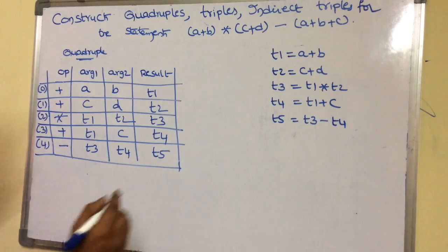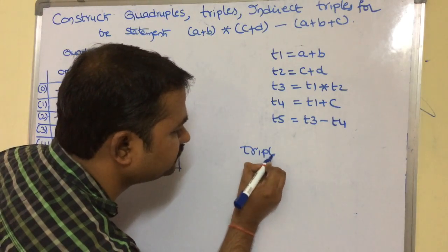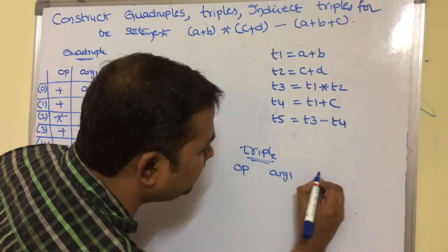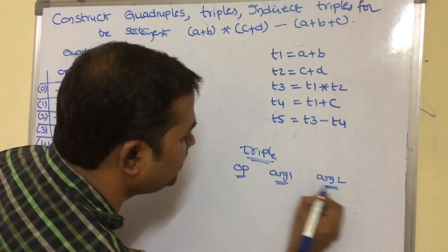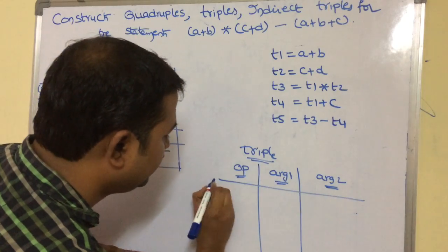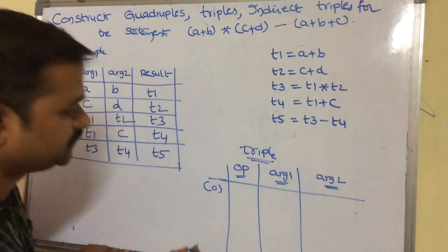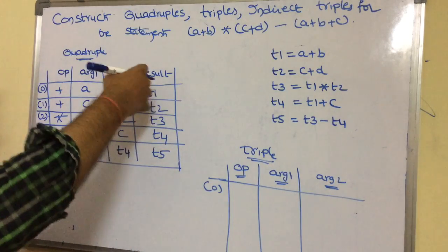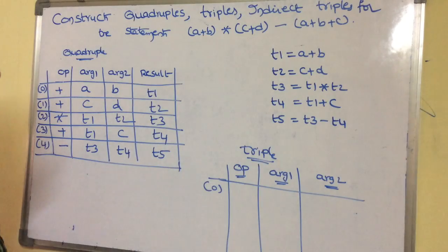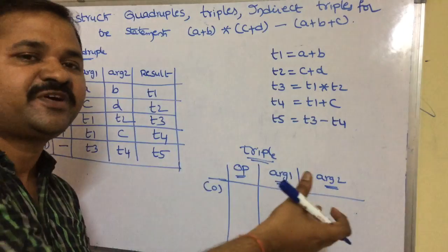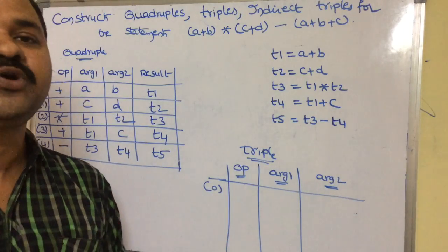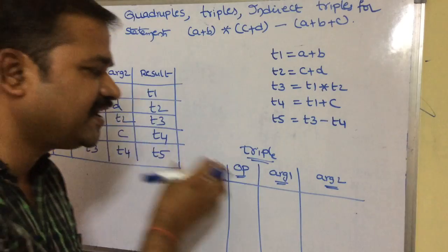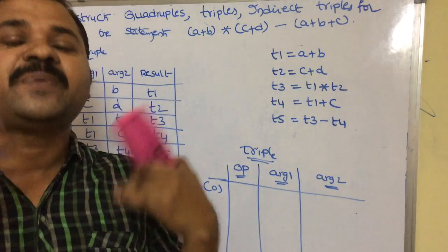Now the second representation is triple. Triple means the instruction contains 3 fields: operator, argument 1, and argument 2. The major disadvantage of the quadruple approach is that 5 temporary variables are needed in this example, which must be stored in the symbol table, requiring much more memory. To overcome this problem, we use triples. In a triple there is no need for any temporary variables.